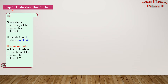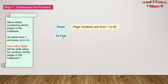Step 1: Understand the problem. What is given to us? We are given that Steve starts numbering the pages in his notebook and they go up to 40. In our own words, page numbers are from 1 to 40. What is there to find? We have to find how many digits he will write — that is, the total number of digits Steve writes.